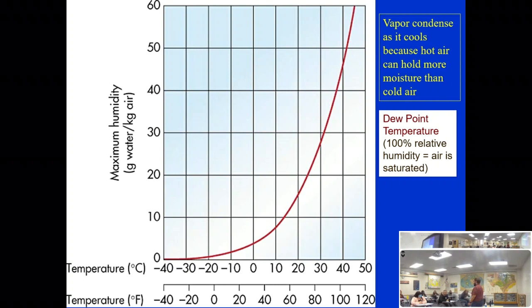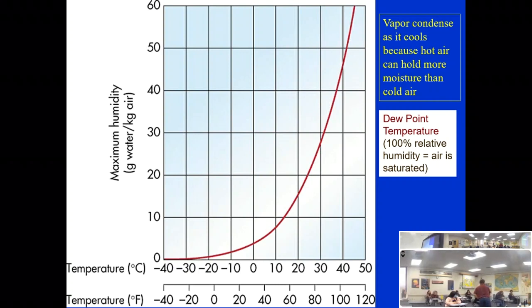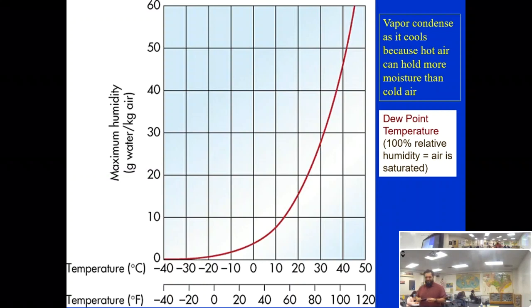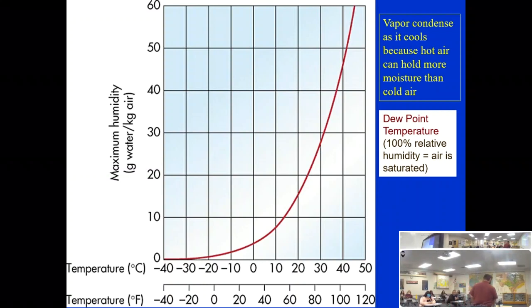You read both thermometers after swinging and use a table to determine relative humidity from the difference between the wet and dry bulb readings. Earlier today it was about 50% humidity — which means the air has half the water it could potentially hold.